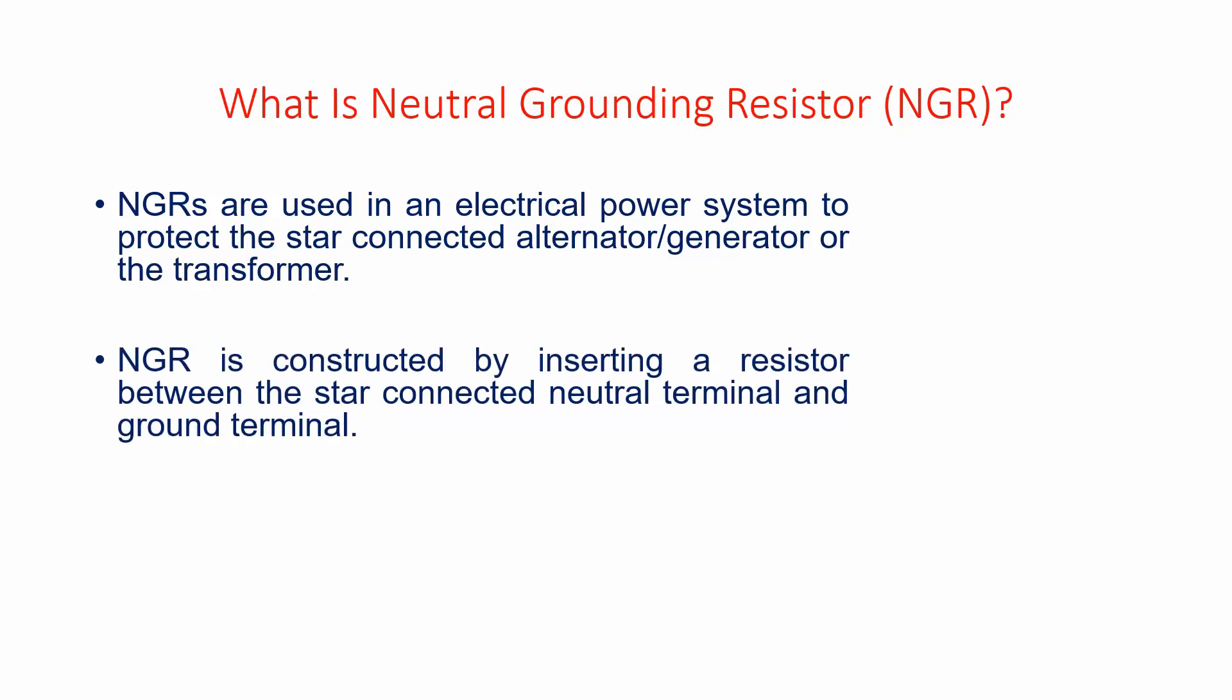NGR is normally constructed by inserting a resistor between the star-connected neutral terminal and ground terminal. You can see this neutral connected terminal here.